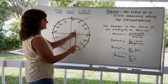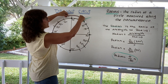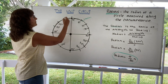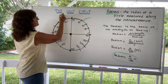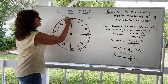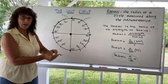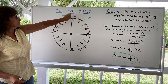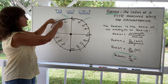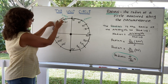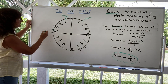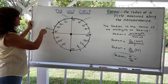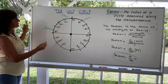Now let's measure a second radian. From the end of the first radian, we stretch it around the circumference and the second radian goes to about right here — let me mark this. So here is two radians. Now let's mark a third. From the second radian, we go around to about here — this third radian spans to about here. So there are three radians.